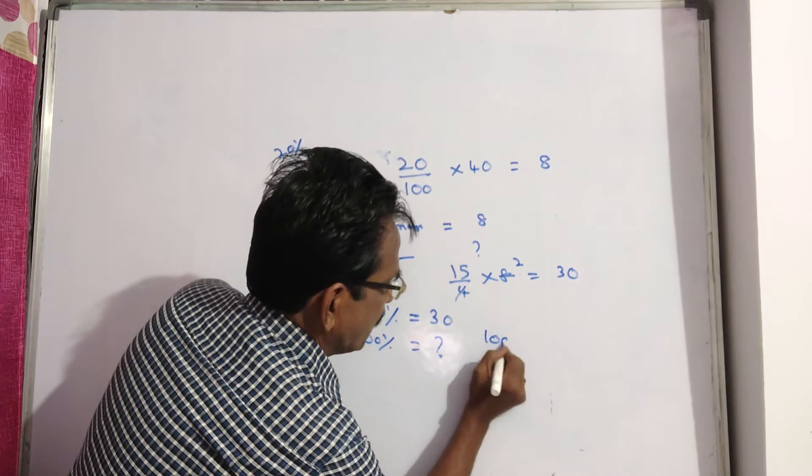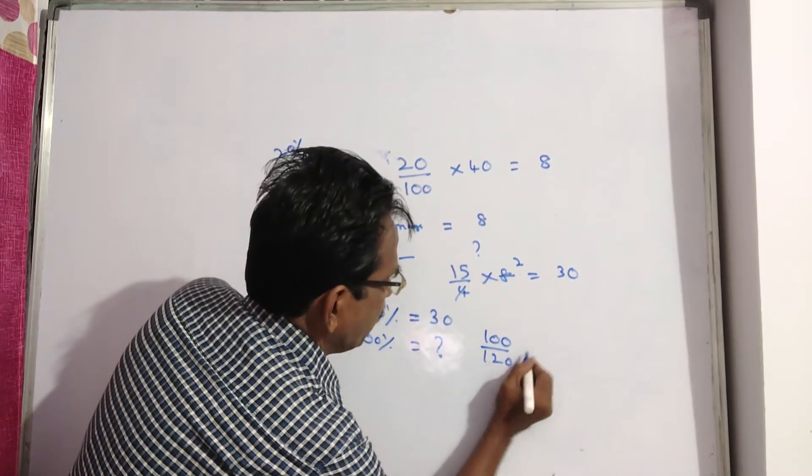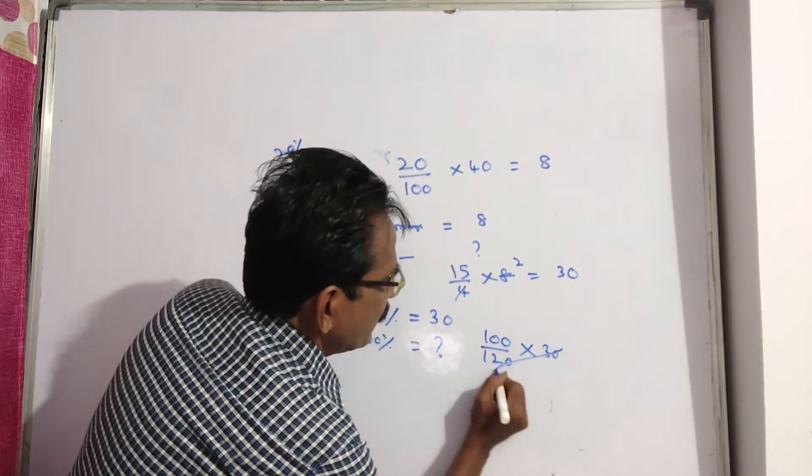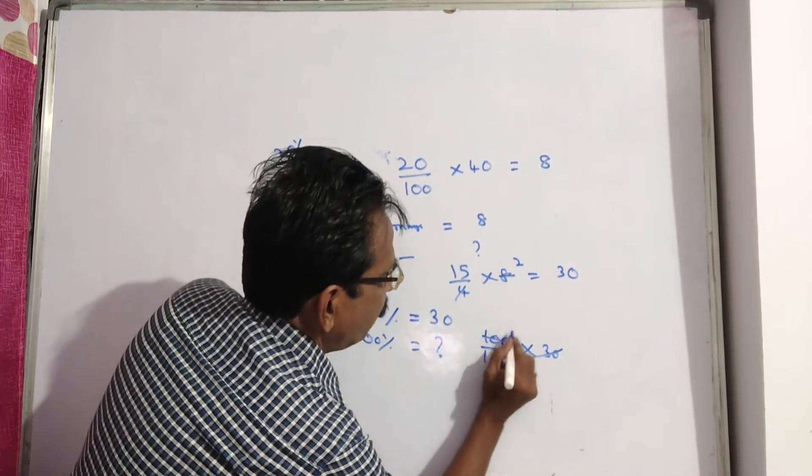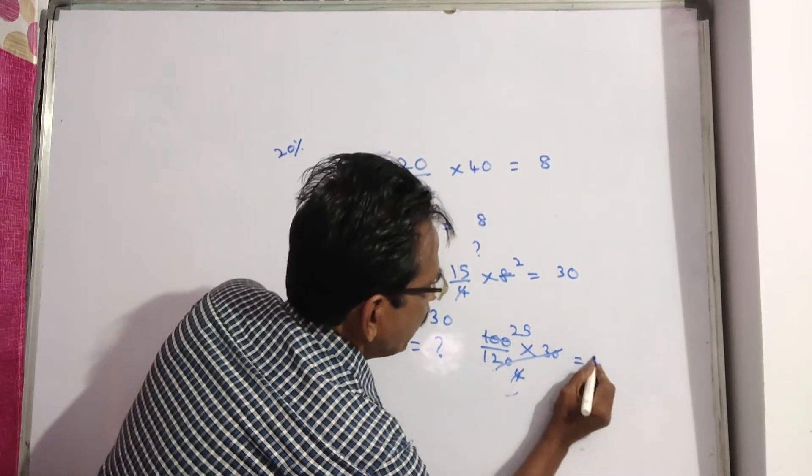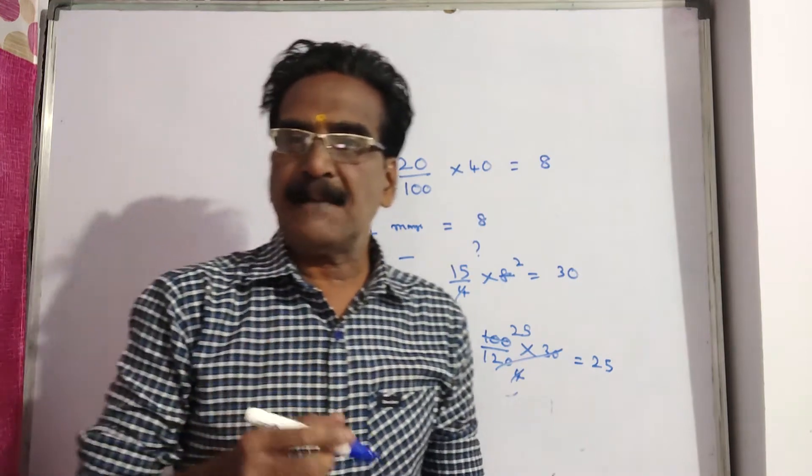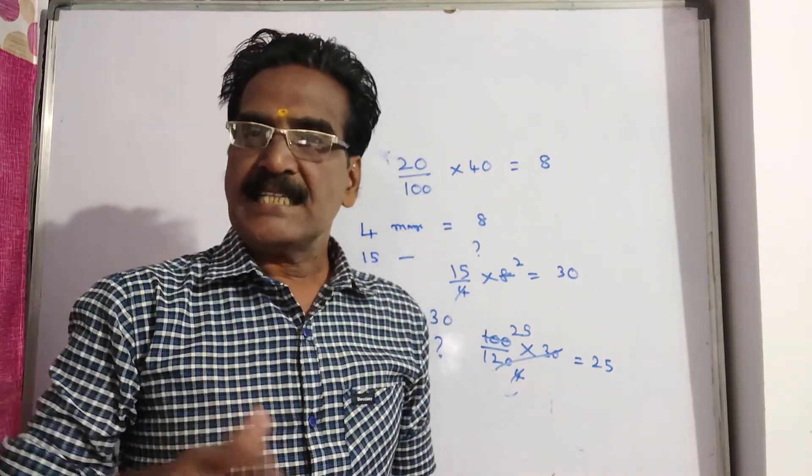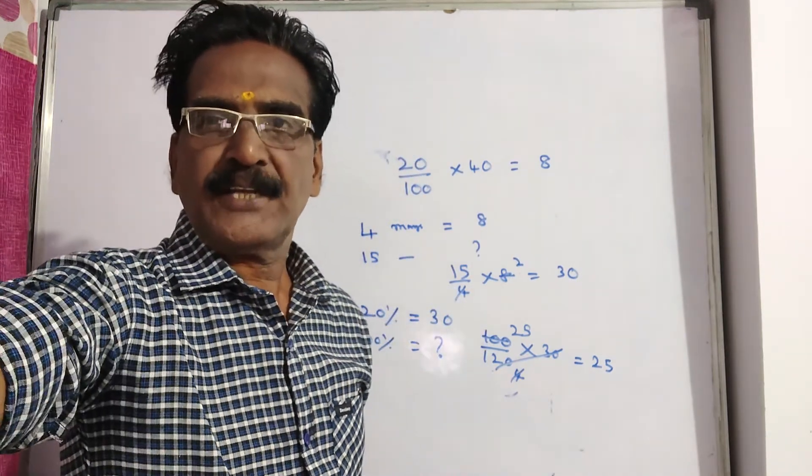So we want to find 100%. 100 by 120 into 30, 3 4 for 25. So 25 rupees was the original price of 15 mangoes before the increase. Okay friends, thank you.